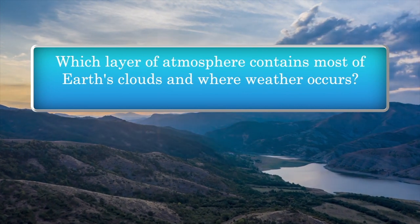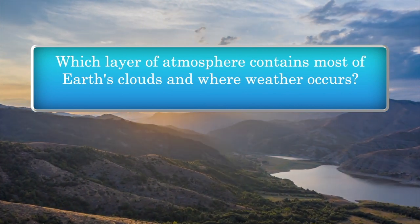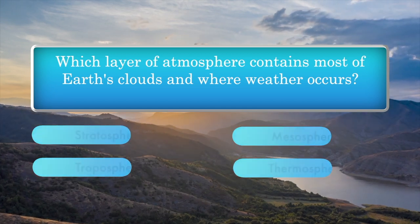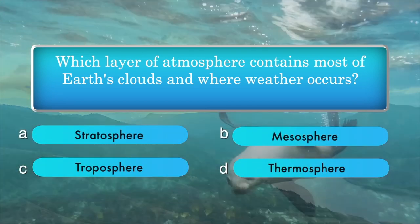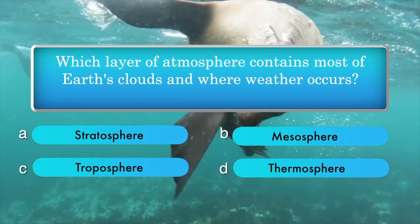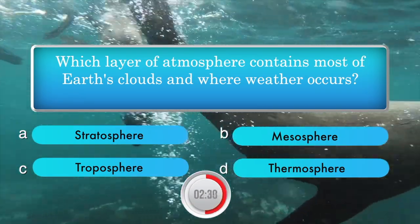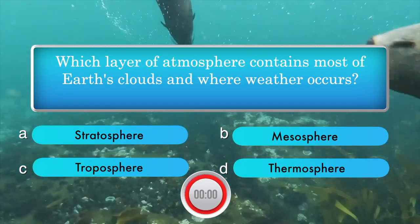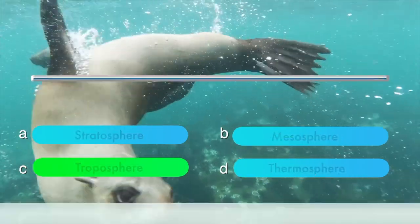Which layer of the atmosphere contains most of Earth's clouds and where weather occurs? Options: stratosphere, mesosphere, troposphere, thermosphere. Answer is troposphere.